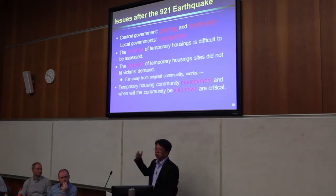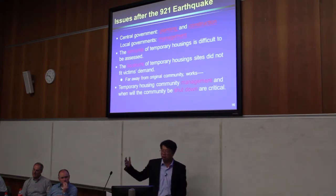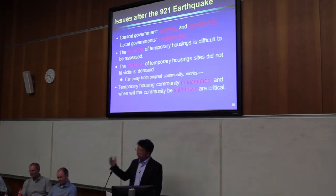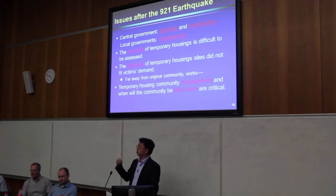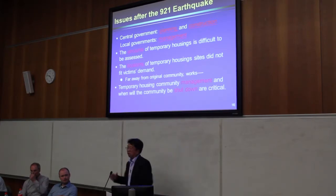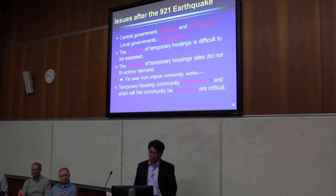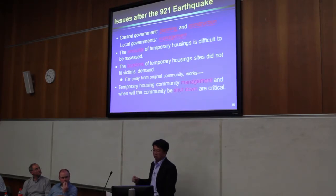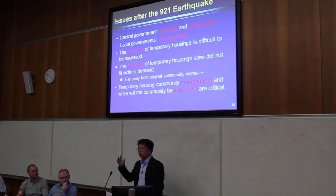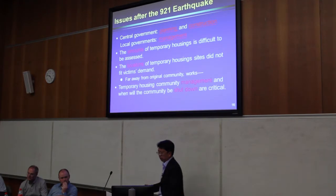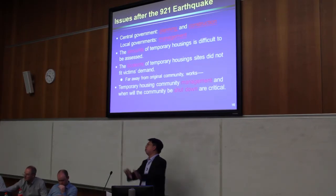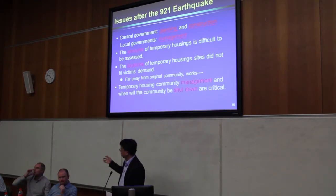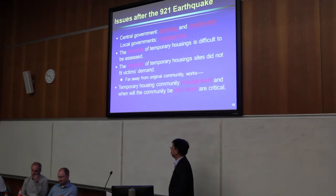However, it was very difficult to assess how much temporary housing should be built. After a survey, some victims said they wanted to move into temporary housing, but after it was built, they had already found rental housing so didn't want to move. The location of the temporary housing was also very critical — many people argued it was far from their workplace or far from their original community. And because more and more people moved back to permanent housing, there were increasing vacancies in the temporary housing sites, making management very difficult.